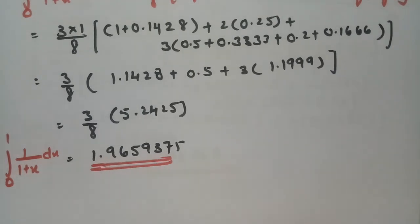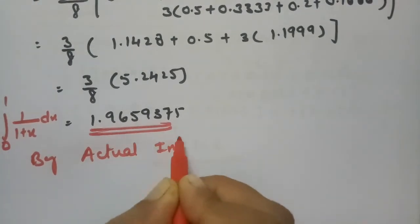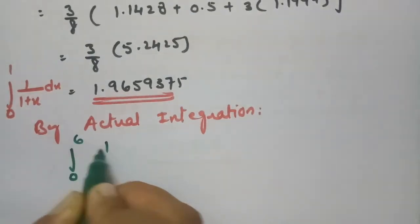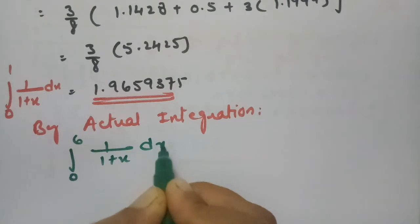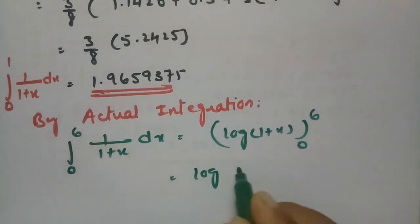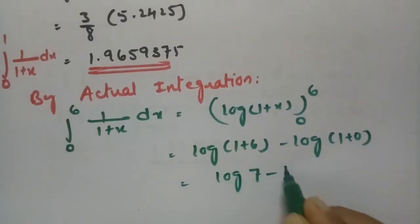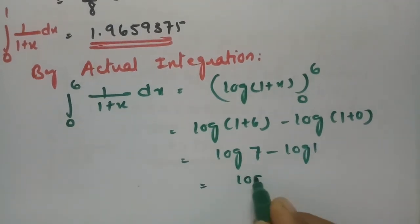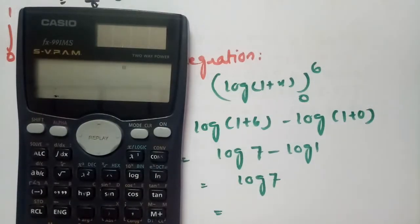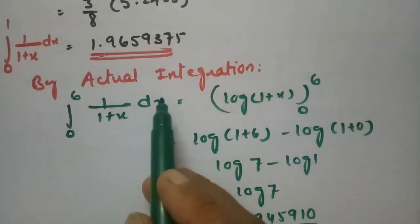By actual integration, the integral from 0 to 6 of 1/(1+x) dx equals [log(1+x)] from 0 to 6, which is log(1+6) − log(1+0) = log(7) − log(1) = log(7) − 0 = log(7) = 1.945910.